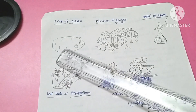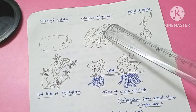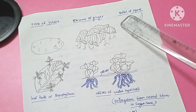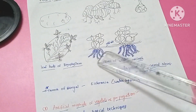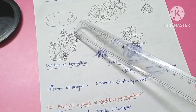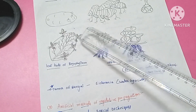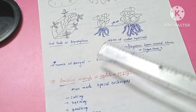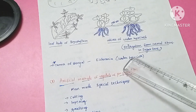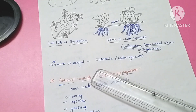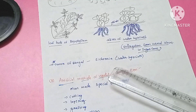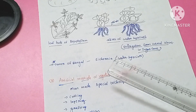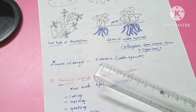Looking at pictures: in potato, new plants develop from the eye-like structures. In ginger rhizome, scaly leaves are present from which new plants develop. The bulbil of agave and the offset of water hyacinth are shown. In Bryophyllum, small buds develop from the margins of the leaf, detach, and develop into new plants.